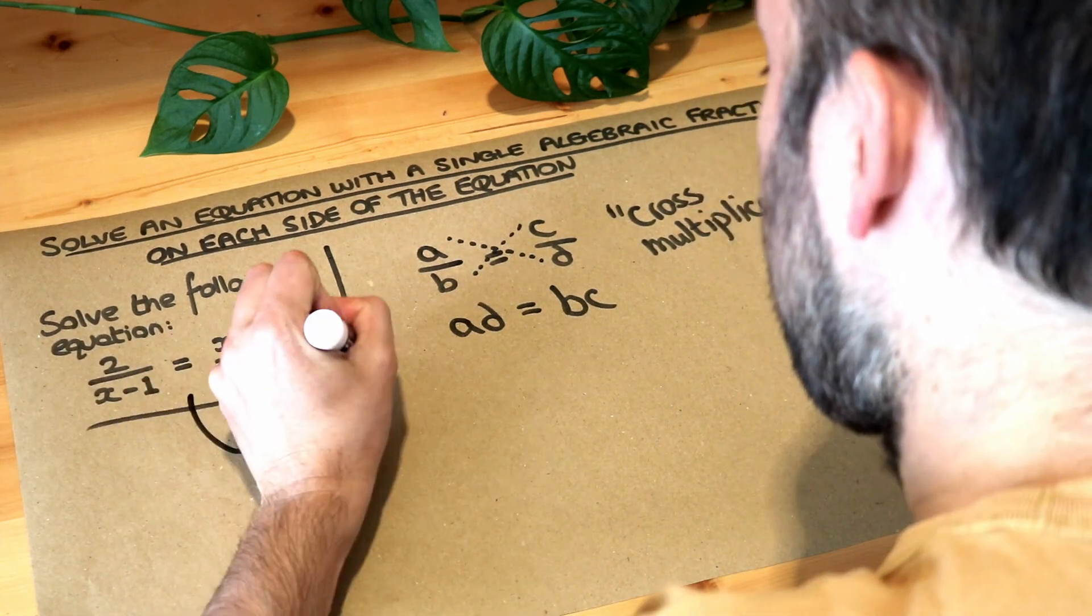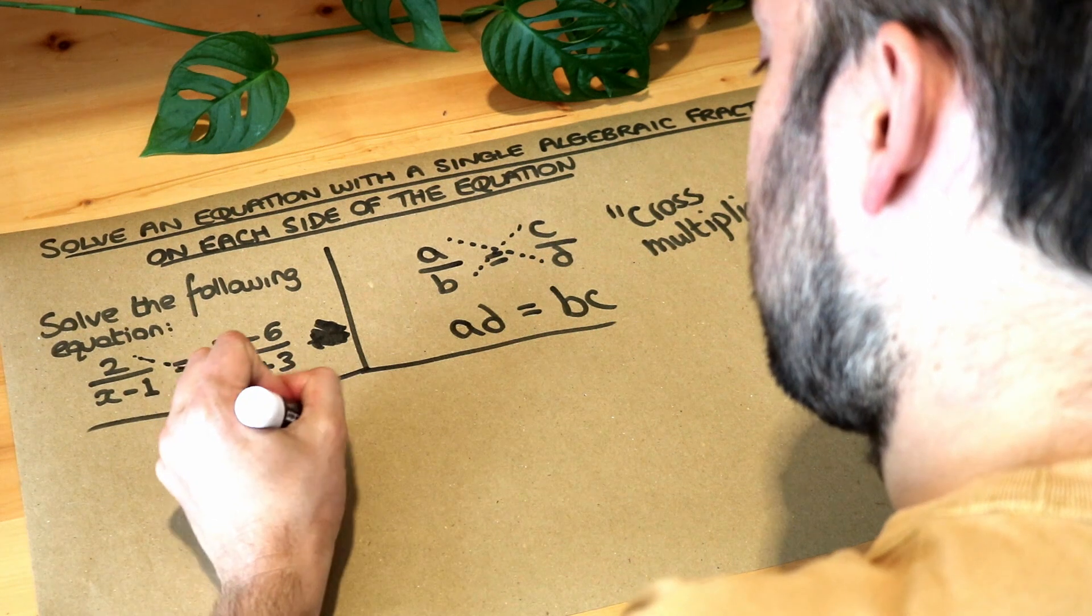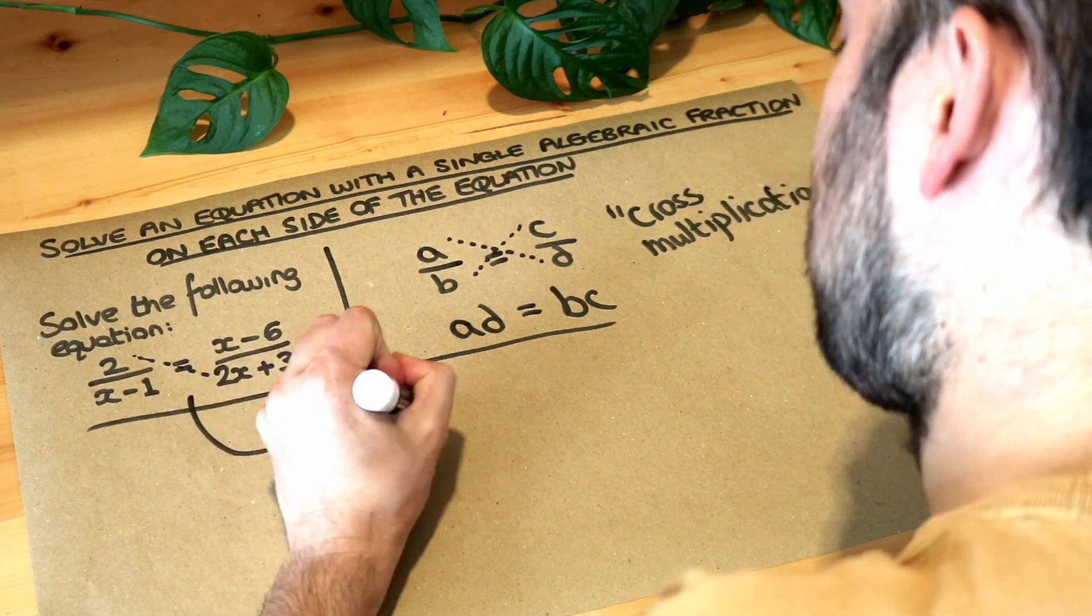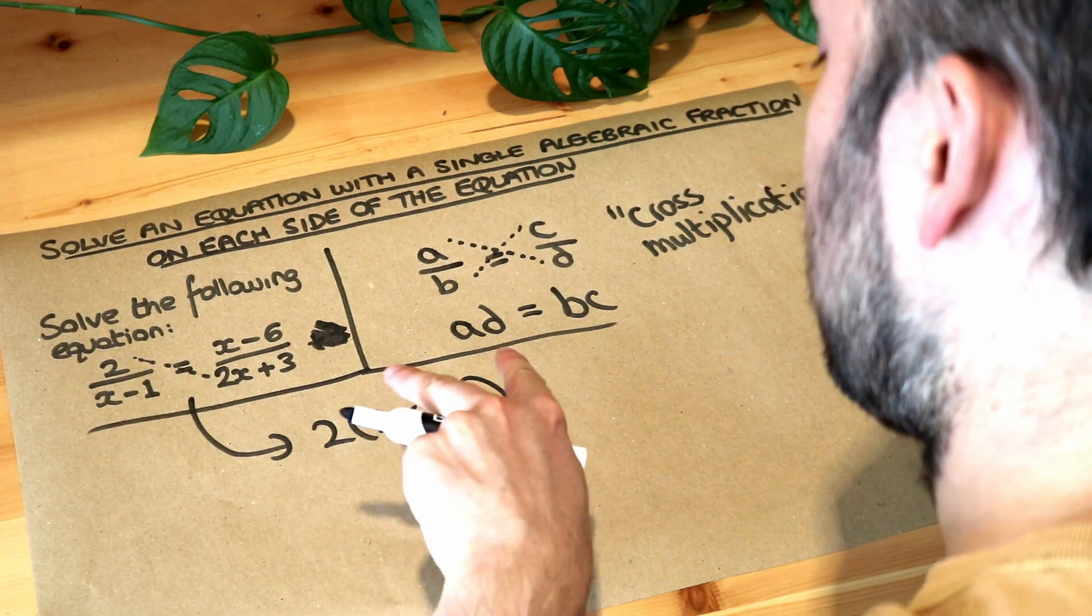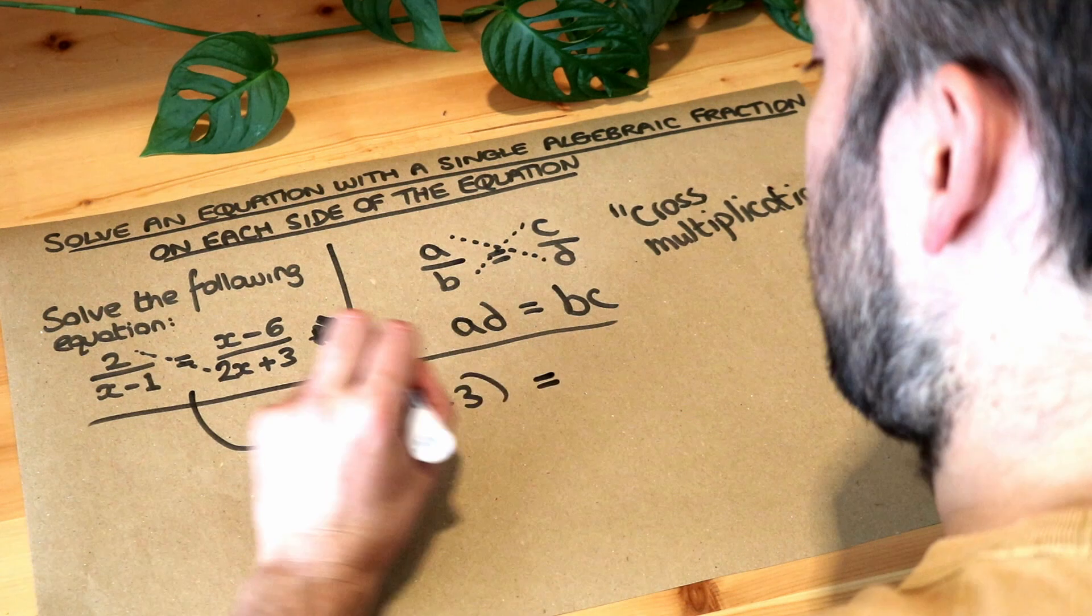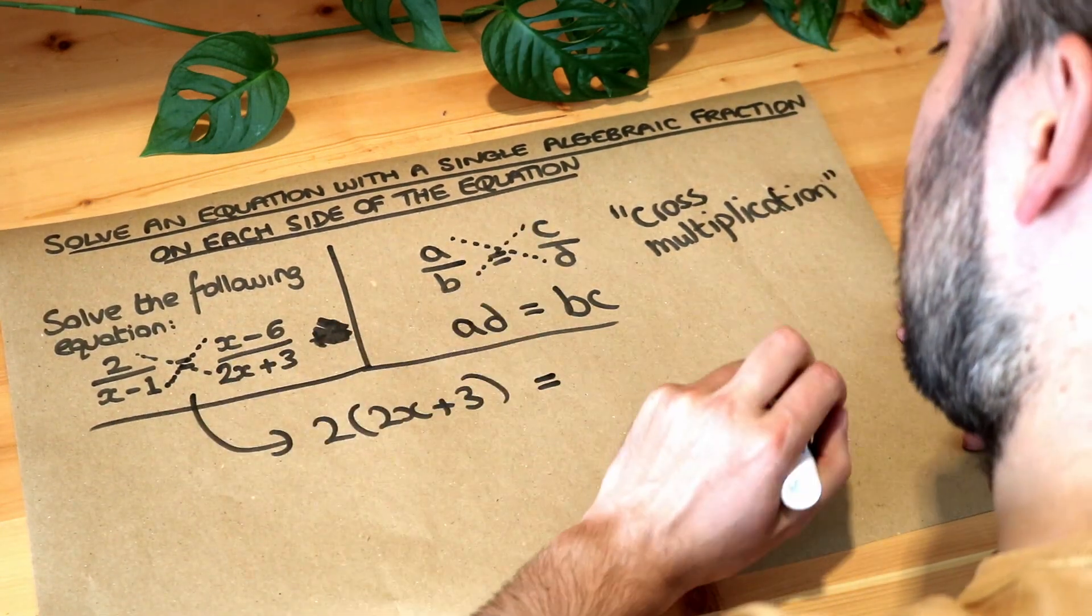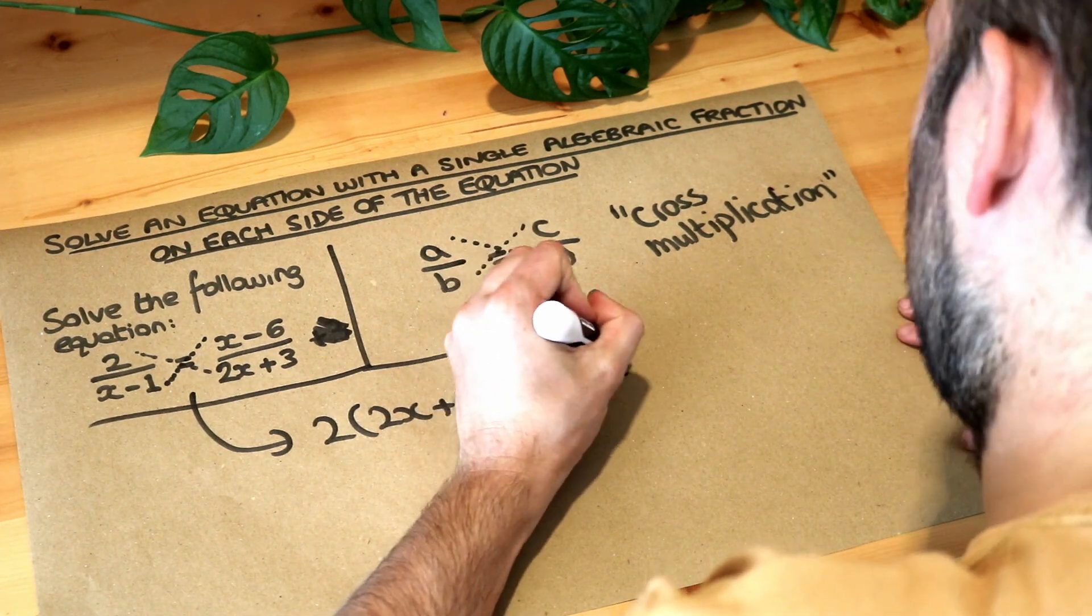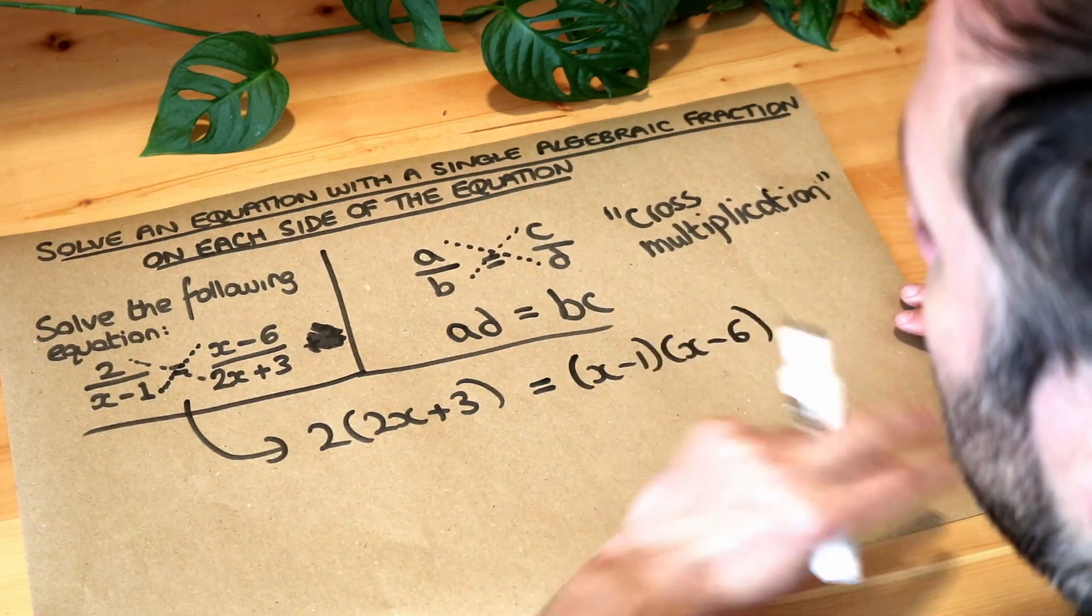So let's do that here. We can do the 2 multiplied by 2x plus 3. I'm just going to use brackets for the moment because when I write this that just means 2 multiplied by 2x plus 3, we'll expand in a second. And then we can also do this thing here to complete the cross: x minus 1 times x minus 6. So now we've got an equation without fractions.